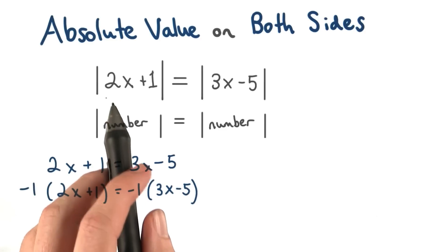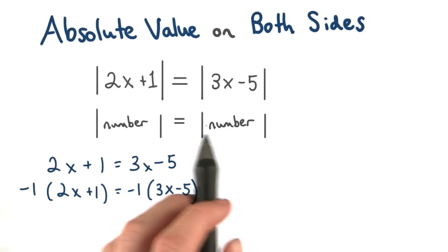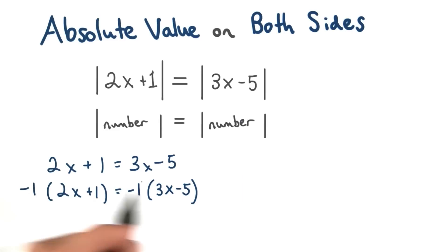We also said that they could both be negative. Remember, a negative number equaling a negative number. But this equation is the same one we just have. We've just multiplied both sides by negative 1, so I don't need to solve this.